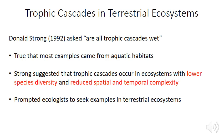This is a clear example of a trophic cascade. However, until recently most well-documented examples came from aquatic habitats. Donald Strong in 1992 facetiously asked 'Are all trophic cascades wet?' suggesting they occur in ecosystems with lower species diversity and reduced spatial and temporal complexity — features shared by many aquatic systems. This prompted ecologists to seek examples of trophic cascades in terrestrial ecosystems.